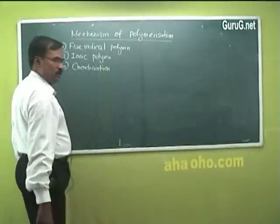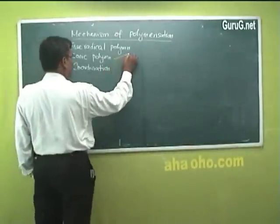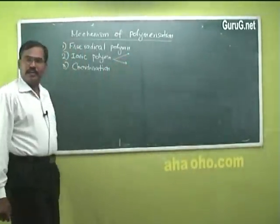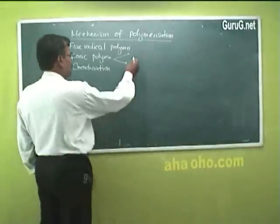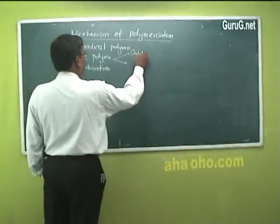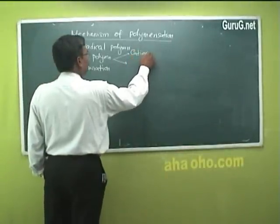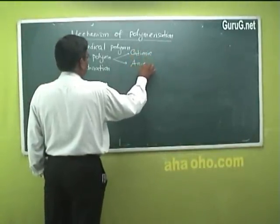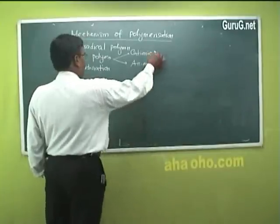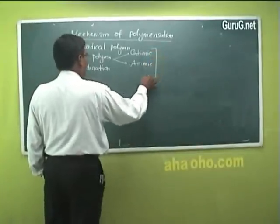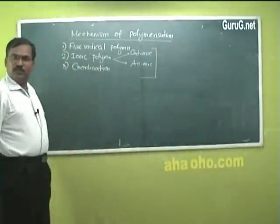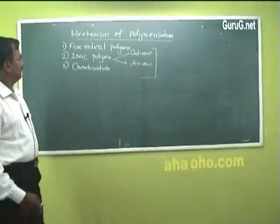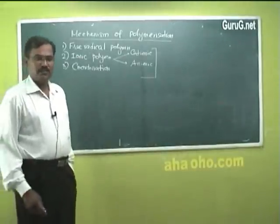Ionic polymerization is again divided into two types: cationic polymerization and anionic polymerization. However, we are not going to cover the latter two. Only the first one — free radical polymerization — is in the syllabus.